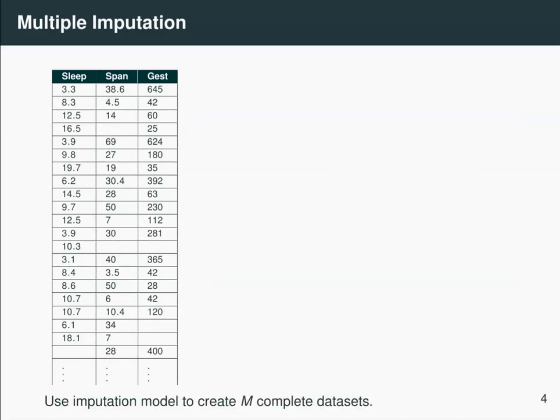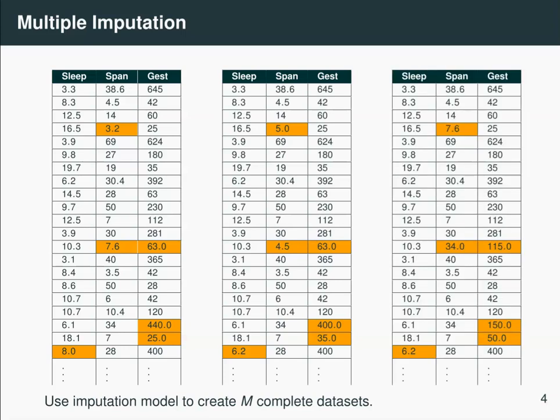Next, we're going to talk about multiple imputation. In this approach, you're going to replace the missing values using your imputation model, which I'll talk about in a minute. And you do this m times, so you get m copies of the complete dataset, each one where you've imputed the missing value.